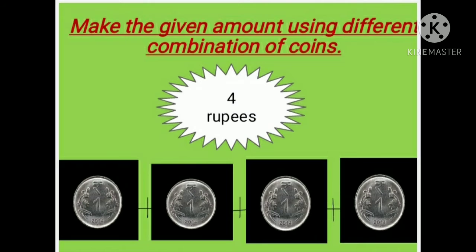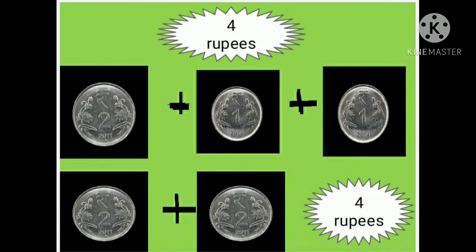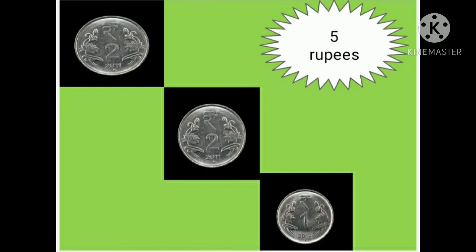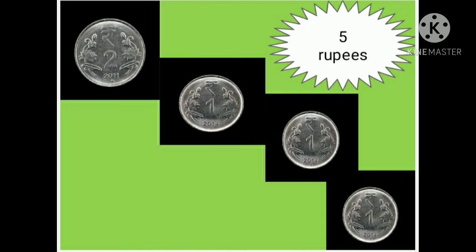Make the given amount using different combinations of coins. If we add 4 one-rupee coins, it will make 4 rupees. If we add 5 one-rupee coins, it makes 5 rupees. If we add 2 two-rupee coins and 1 one-rupee coin, it will make 5 rupees. And if we add 1 two-rupee coin and 3 one-rupee coins, it will make 5 rupees.